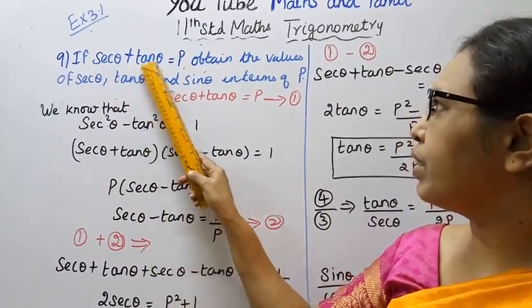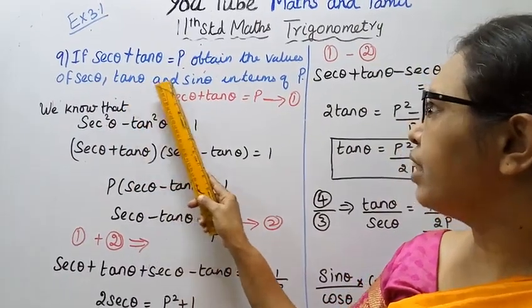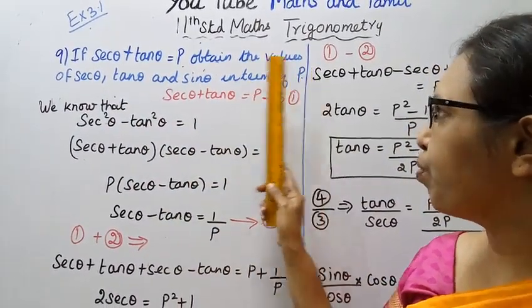If sec θ plus tan θ equals p, obtain the values of sec θ, tan θ, and sin θ in terms of p.